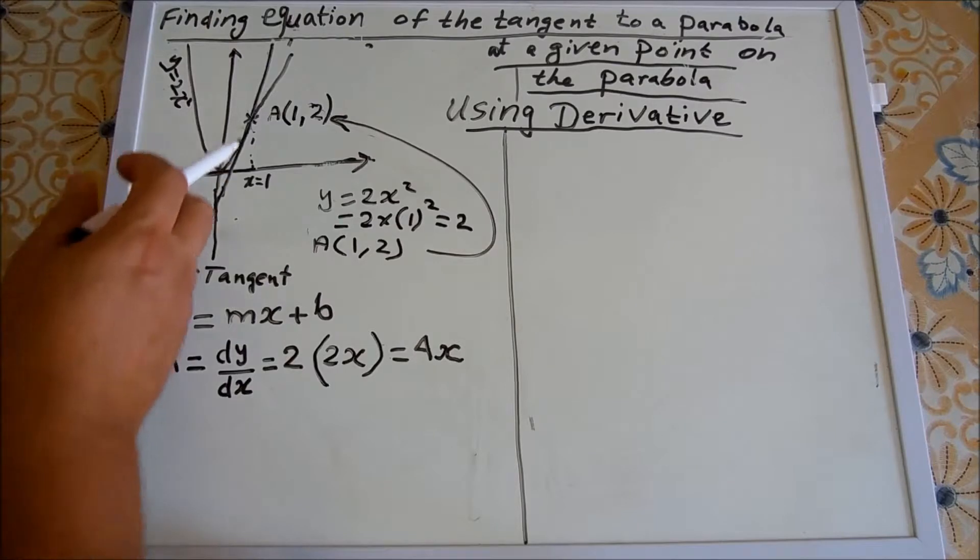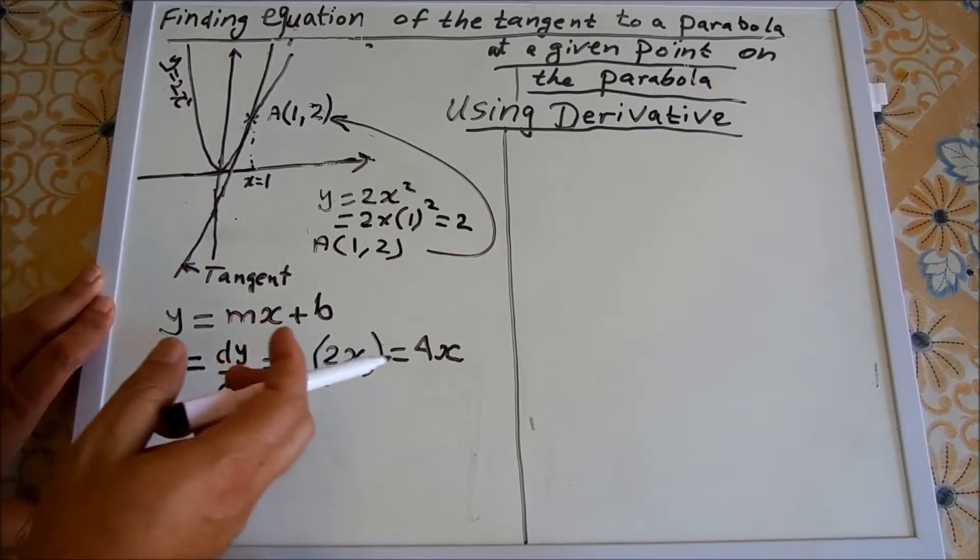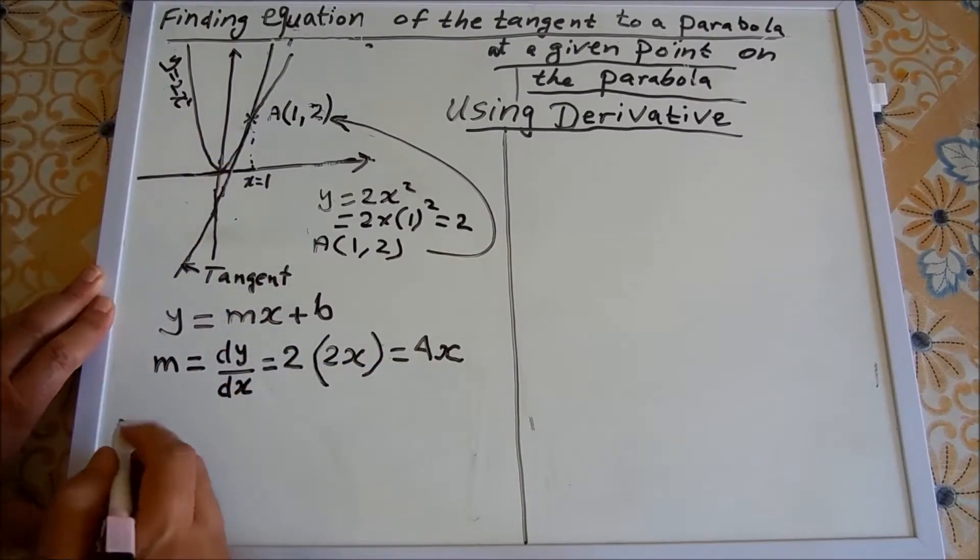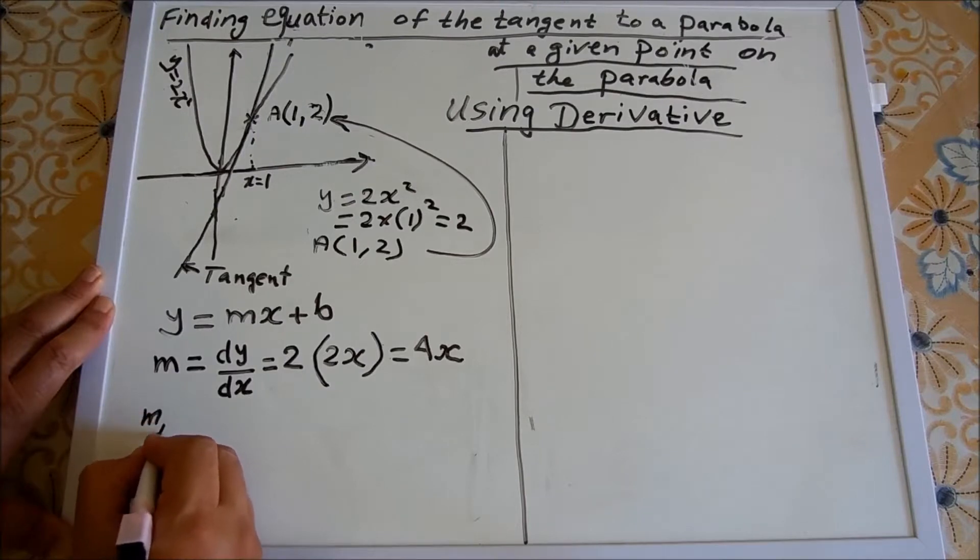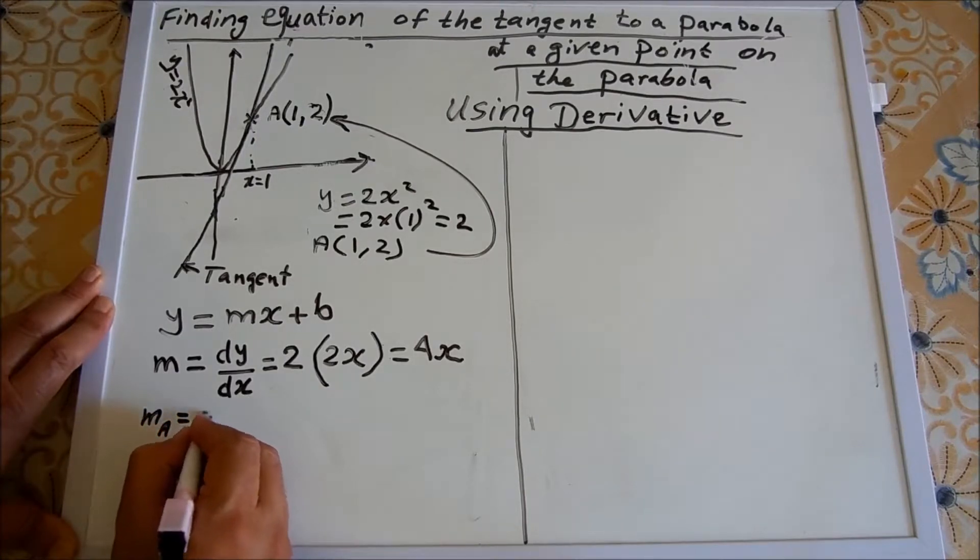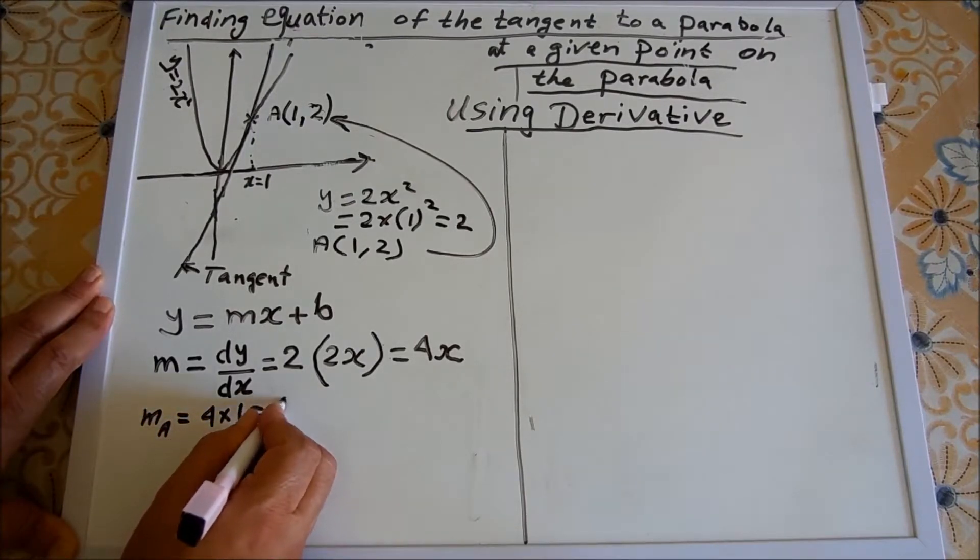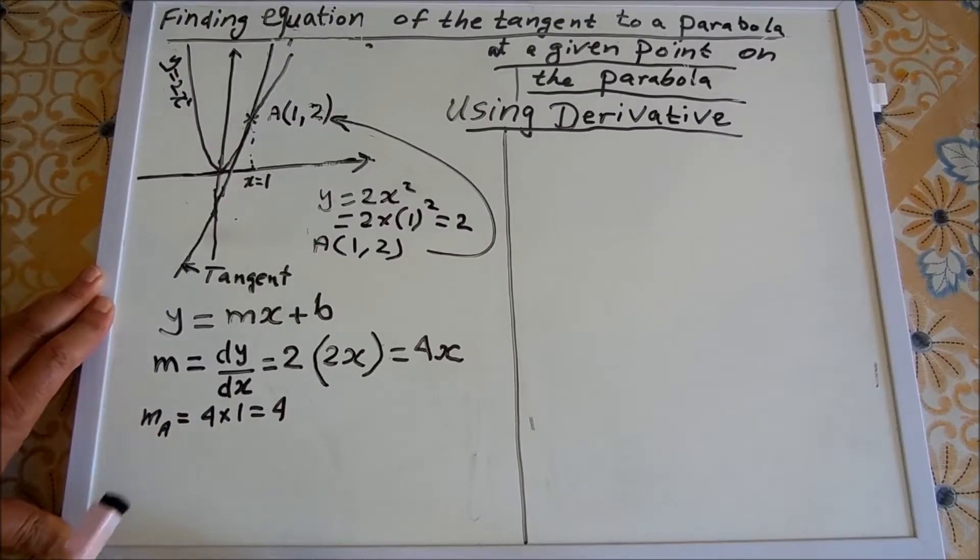But at point A, x equals 1, so we sub m of A where x equals 1 is 4 times 1, so that gives you 4. So the gradient of the tangent is 4.